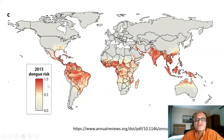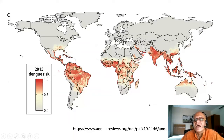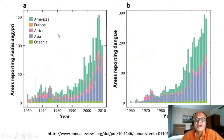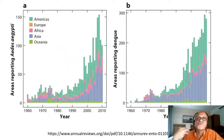Here is a 2015 dengue risk map with values from zero to one. Low-risk regions show positive but small values, while high risk is concentrated in the Global South and tropical countries. Dengue is very much a tropical disease, and we are now tracking how far north it is spreading — that is a key concern related to climate change, in addition to human movement.